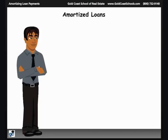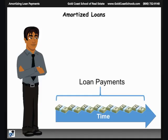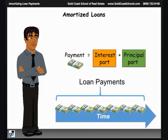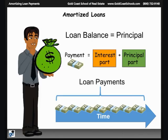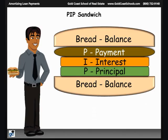Let's do a quick summary of what we've learned. An amortized loan is a loan that is paid off over a period of time through monthly payments. Each payment includes a principal amount that reduces the loan balance and an interest amount paid to the lender. The loan balance is called the principal. The initial loan balance or principal is the total amount borrowed. The PIP sandwich is a memory aid to help do the math steps needed to find the interest and principal parts of the payment and the new loan balance. The top piece of bread is the loan balance before the payment; the bottom piece is the loan balance after the payment.